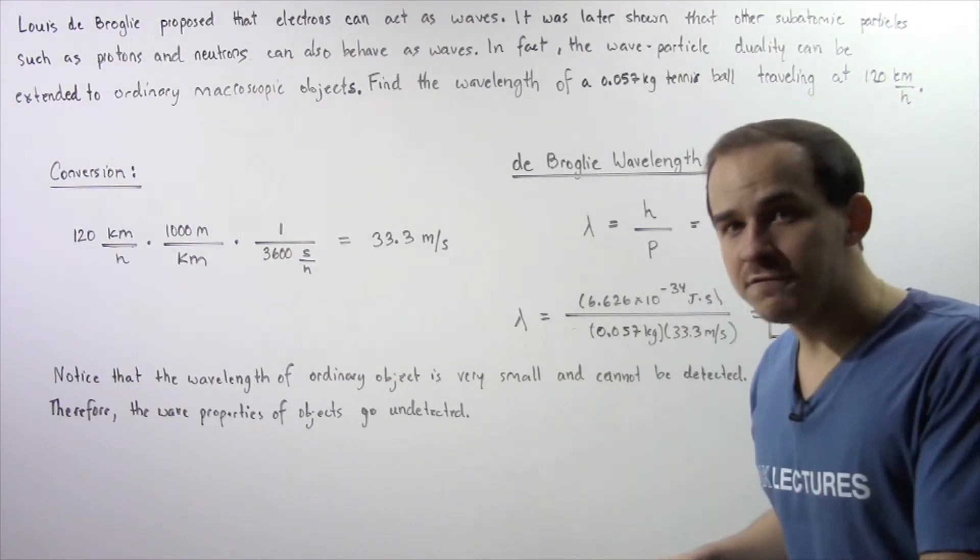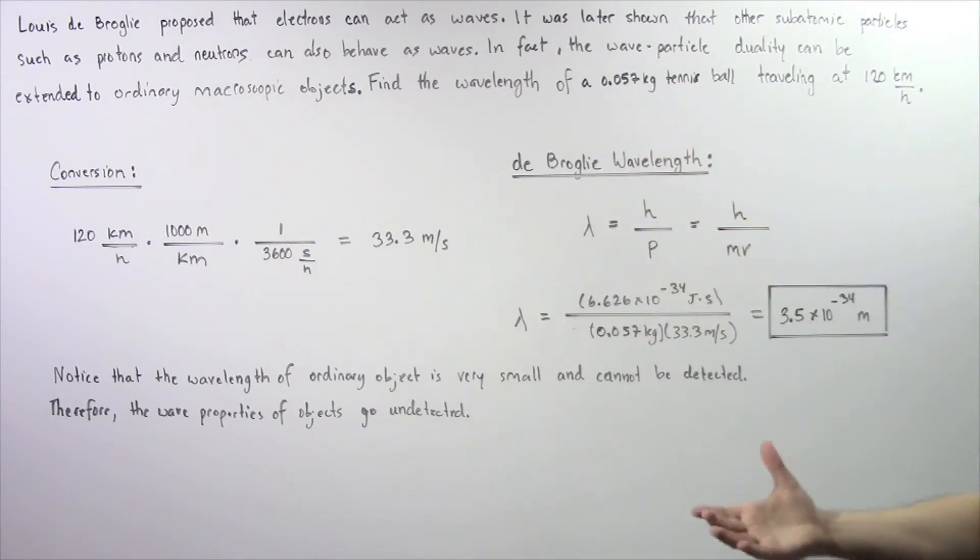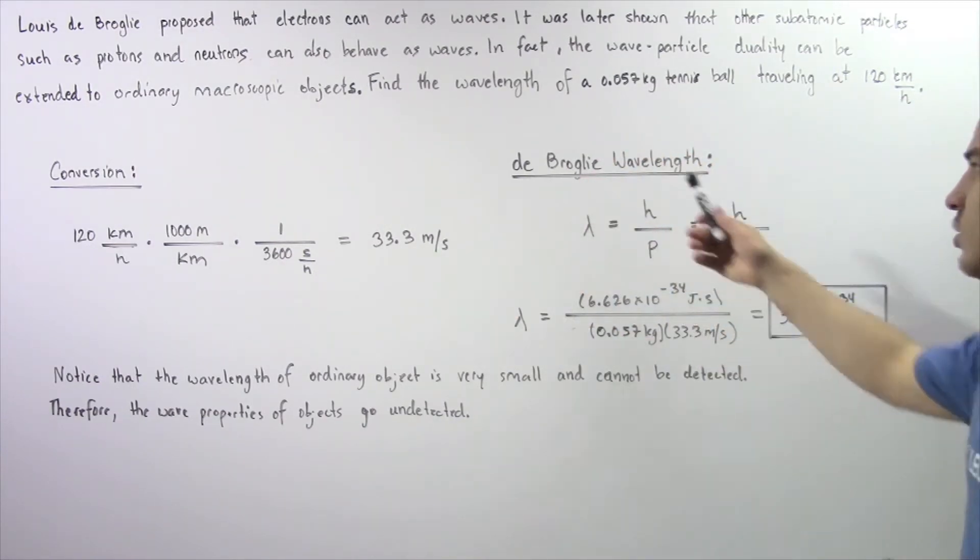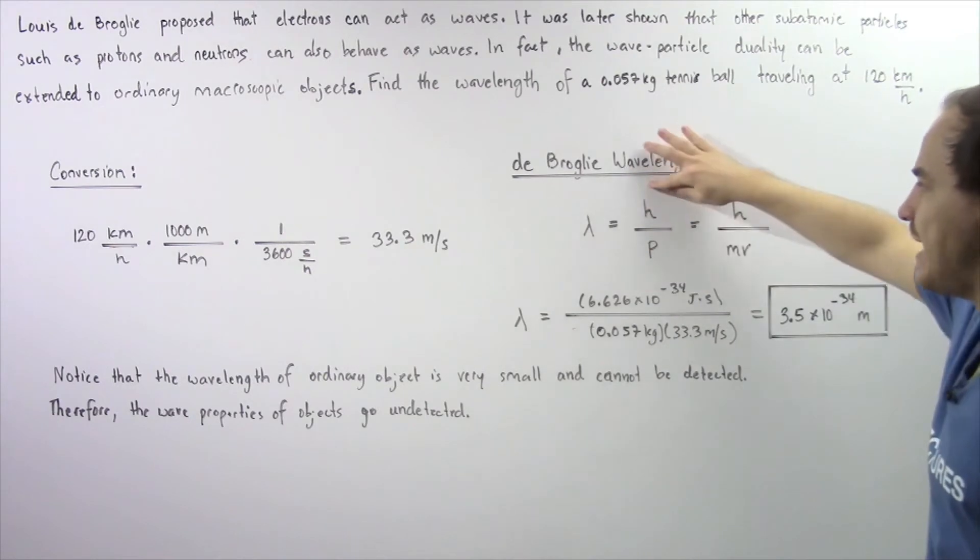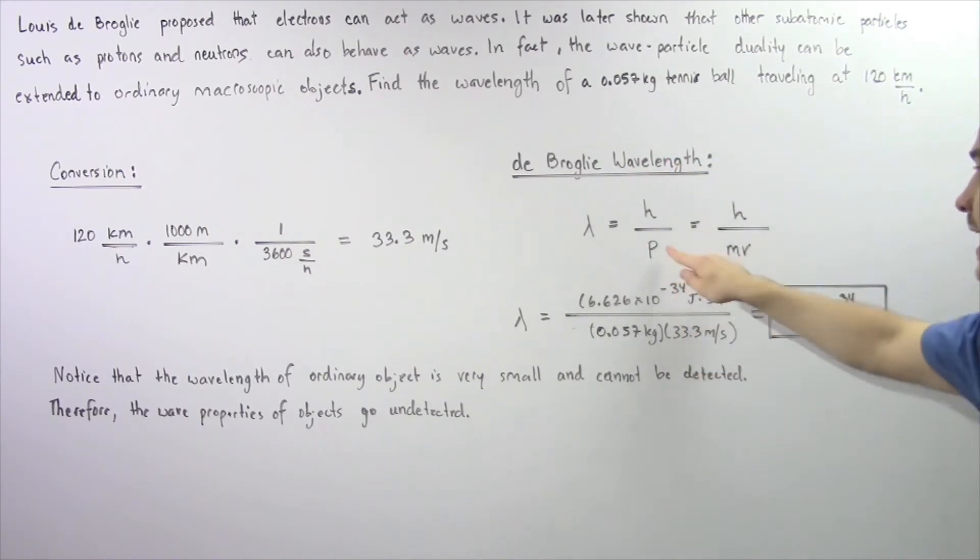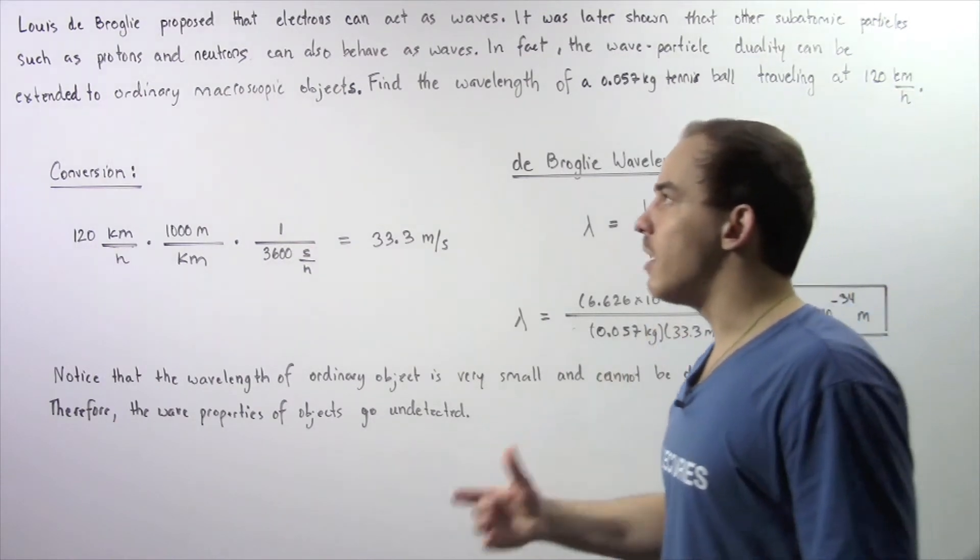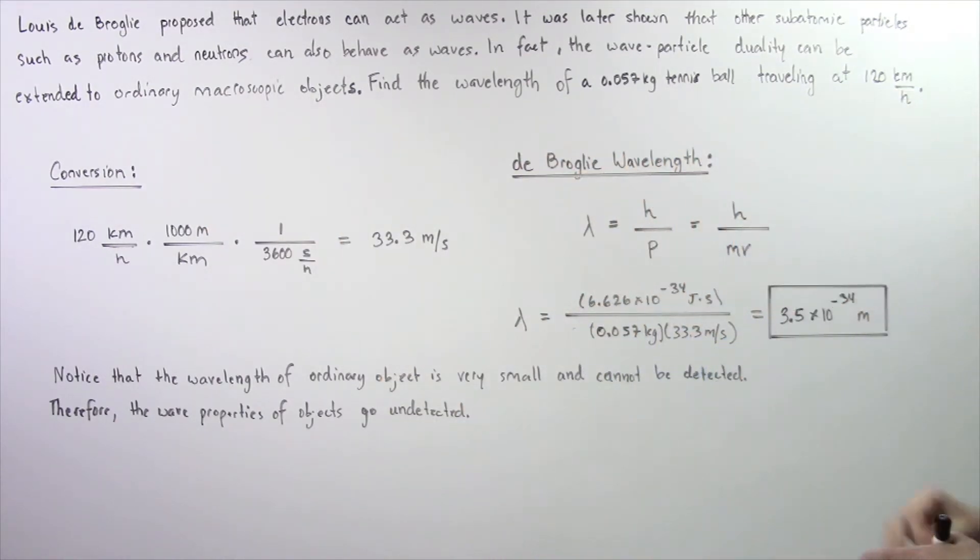So basically, to find the wavelength, we have to use the equation that was proposed by Louis de Broglie and this equation is known as the de Broglie wavelength. So lambda is equal to h divided by p where h is Planck's constant and p is the momentum of our ordinary macroscopic object which is basically equal to m multiplied by v.